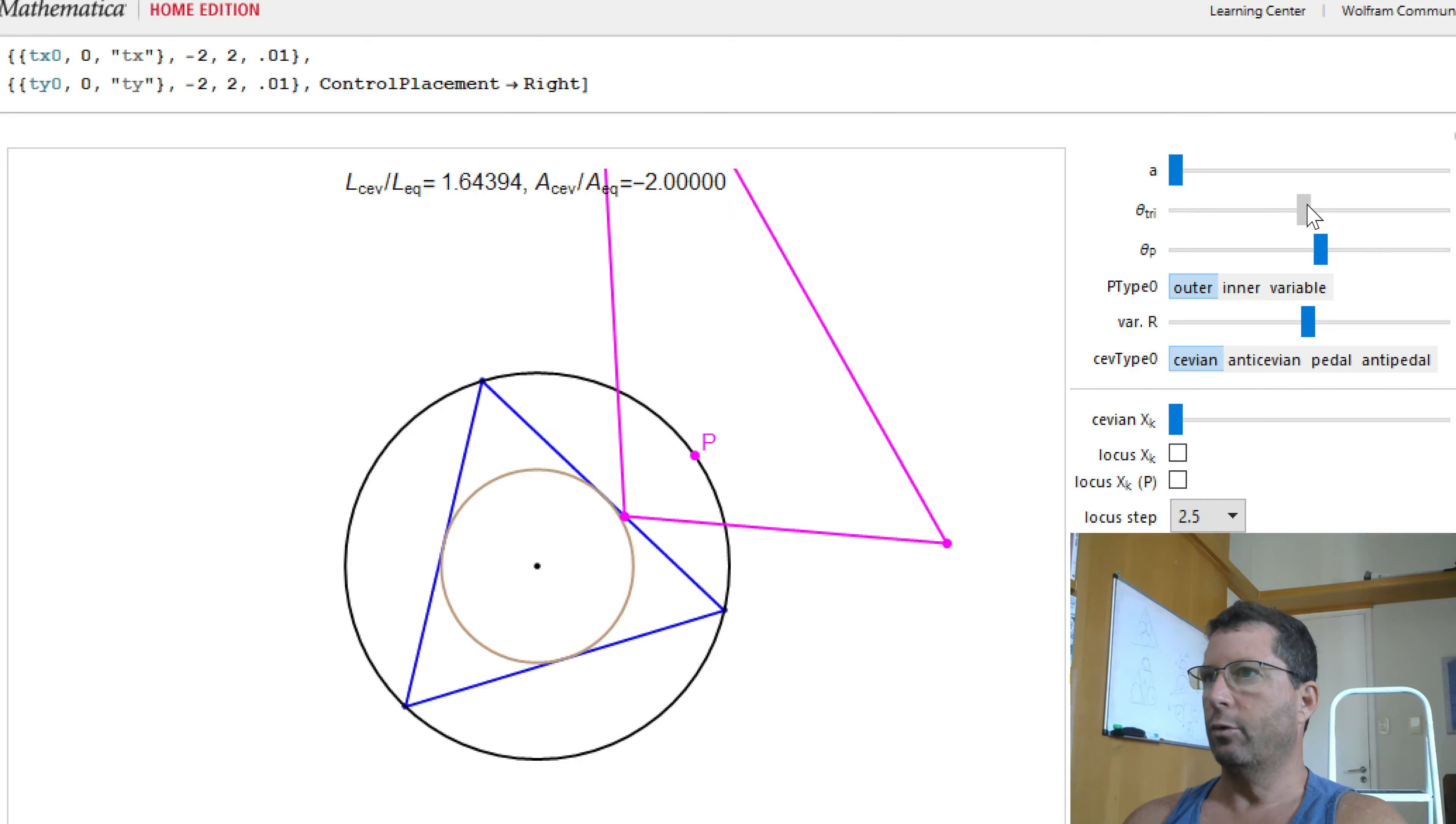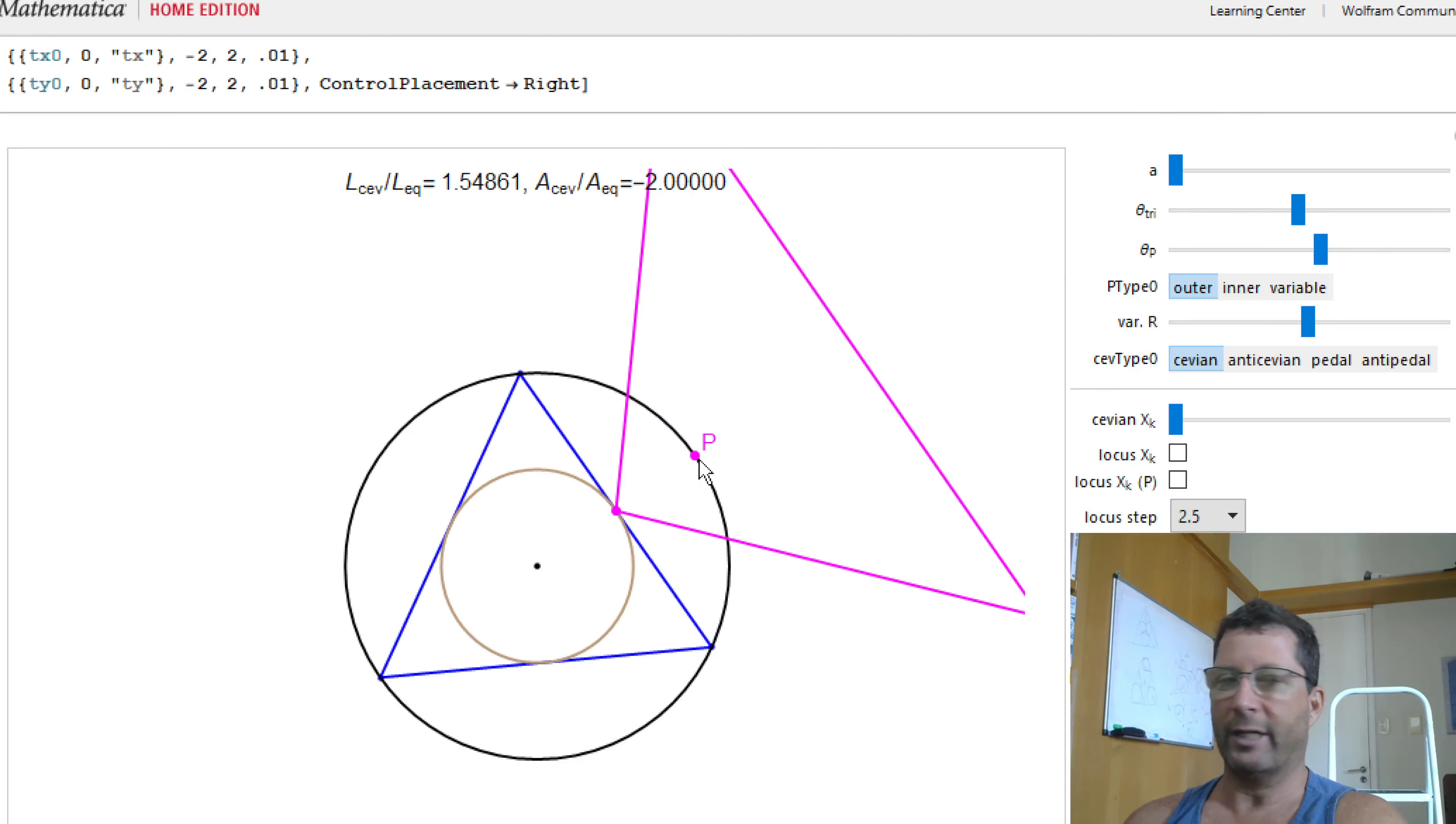So what happens to these Cevian triangles if now I'm going to dislocate P from this outer circumcircle to the inner one?